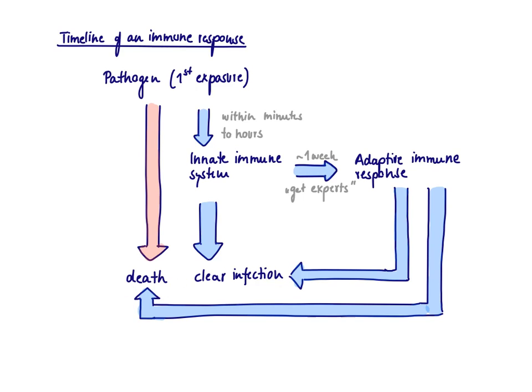And this should explain now why the innate immune system is absolutely necessary. Because this diagram shows you that without innate immune system, you're not even getting an adaptive immune response. So the innate immune system is absolutely required because it's a first line and it's the system that gets us the expert to help clear the infection.